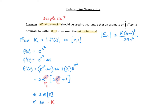Now it's time to bound our midpoint approximation error. We know that our midpoint approximation error is going to be less than or equal to 6e times (1 minus 0) cubed divided by 24n squared, and we really want this to be less than or equal to 0.01. So we're going to take this inequality and solve for n.